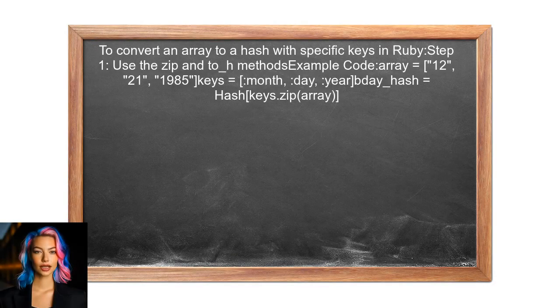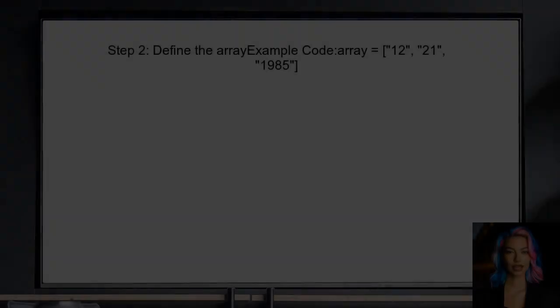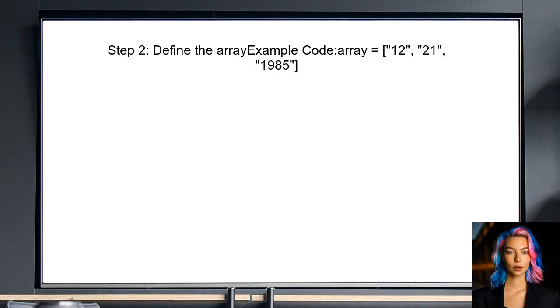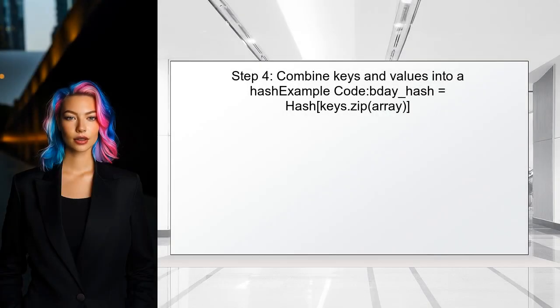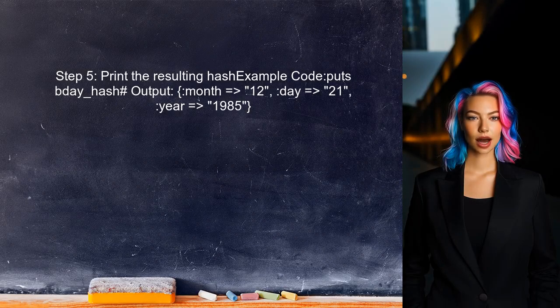To convert an array to a hash with specific keys in Ruby, you can utilize the zip method along with the toH method. This allows for a clean and efficient transformation. First, define the array containing the values — in this case, strings representing the month, day, and year. Next, create an array of keys that correspond to the values in the original array. Then combine the keys and values into a hash using the zip method, which pairs each key with its corresponding value. Finally, print the resulting hash to verify the output, which will show the keys paired with their respective values.